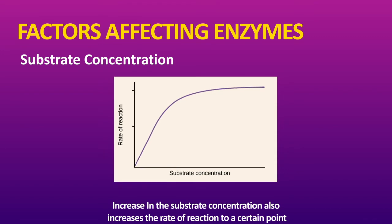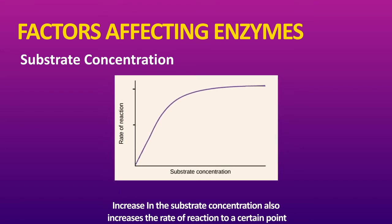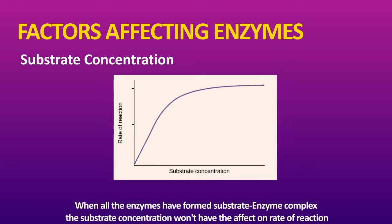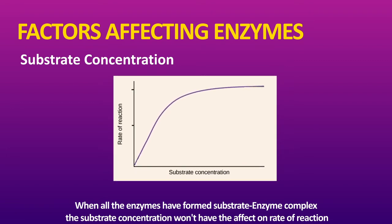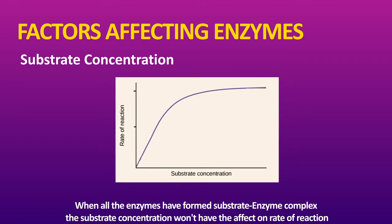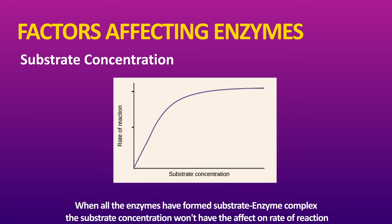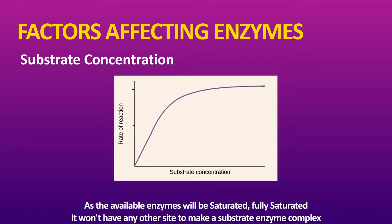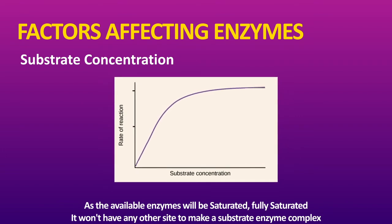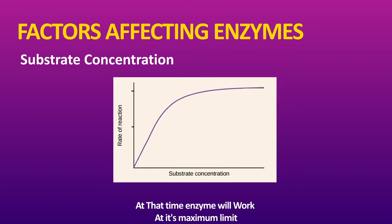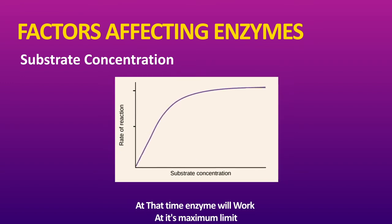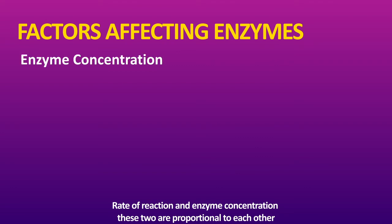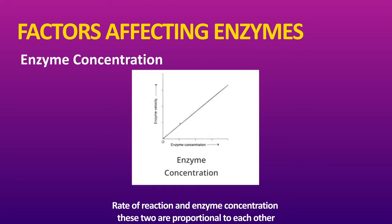Regarding substrate concentration — increasing the substrate concentration also increases the rate of reaction up to a certain point. Once all the available enzymes are saturated and fully occupied forming enzyme-substrate complexes, there is no more room. The enzyme will then work at its maximum rate of reaction. Enzyme concentration and rate of reaction are proportional to each other.